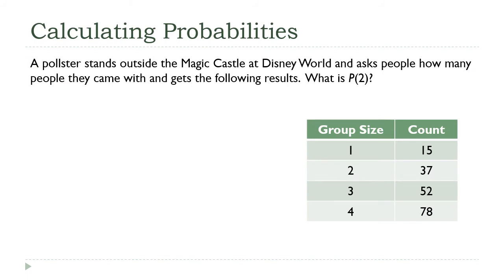Let's look at some data. A pollster stands outside the Magic Castle at Disney World and asks people how many people they came with. What's the size of their party? He gets the following results: there were 15 people who were there by themselves, 37 who were just there with someone else, 52 and 78 who are getting up into families, groups of 3 and 4. I want to know what is the probability of 2. If I go out and I randomly pick a person from the park, what is the probability that that person came in a party of 2? This is the number of parties of 2 divided by the total number of parties in the data. How many parties of 2 were there? That's 37.